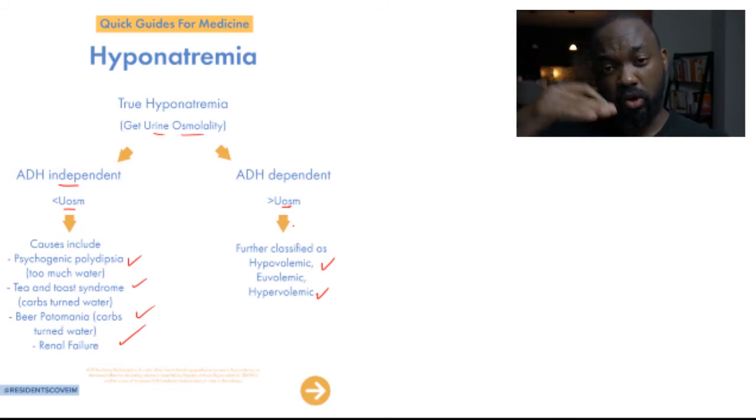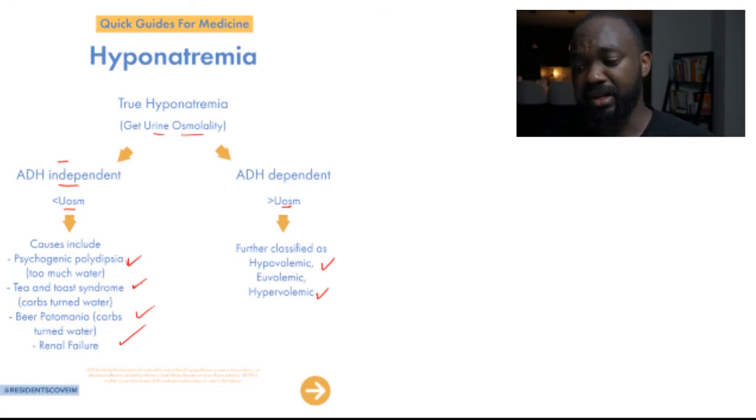So all of these things cause hyponatremia because there's too much water in the body directly, and it has nothing to do with ADH. And that's why on this slide, I've divided into ADH independent, like the ones that I've mentioned, psychogenic polydipsia, tea and toast, beer potomania, ESRD.